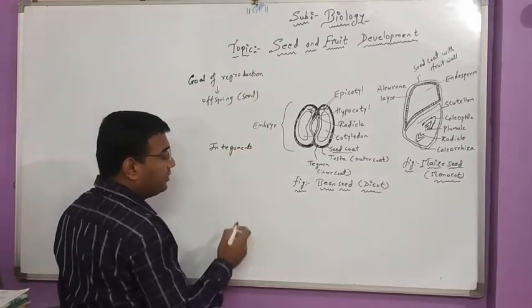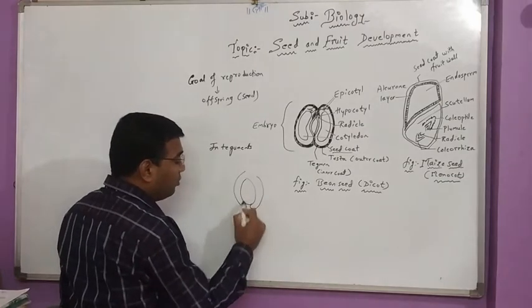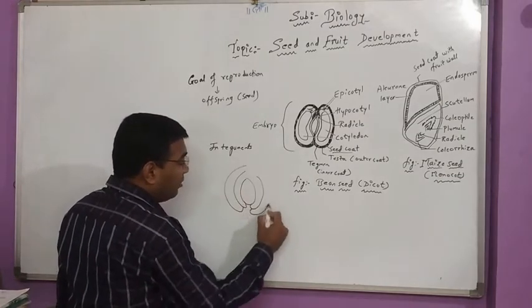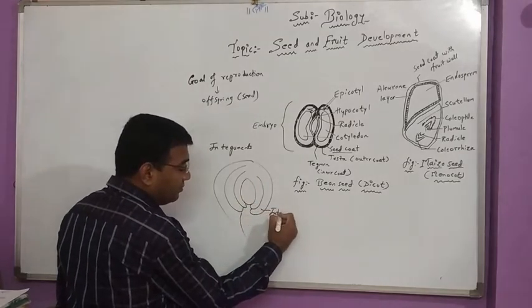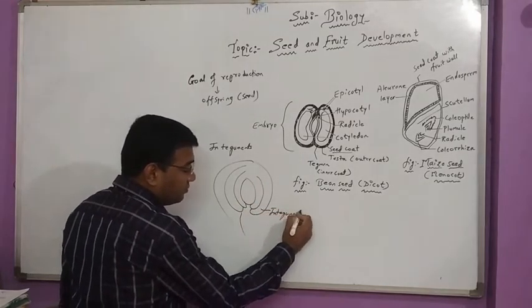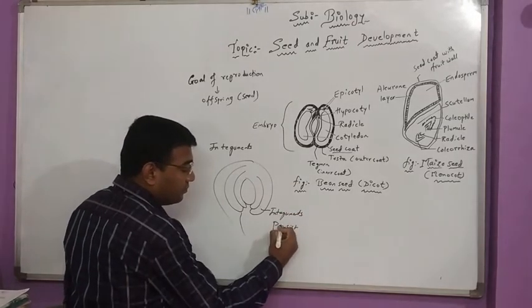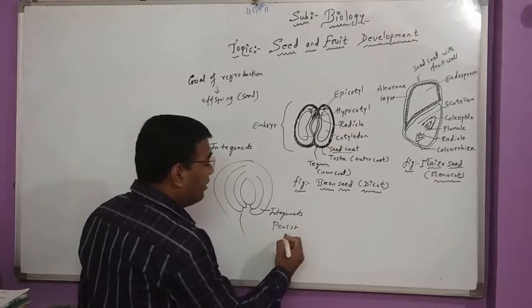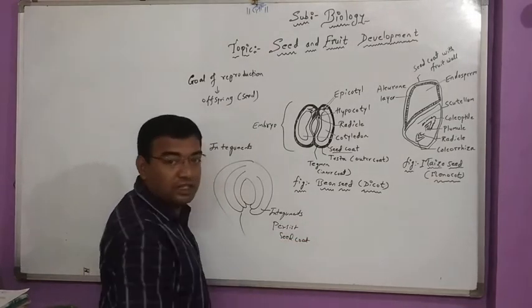This word we have seen when we have discussed about the anatropous ovule. In anatropous ovule, you have seen that the integuments which were there persist, and later on it develops into a seed coat.